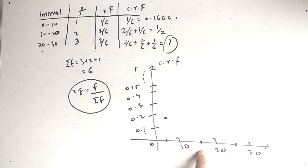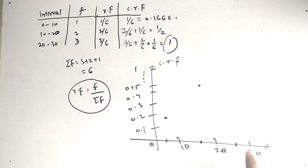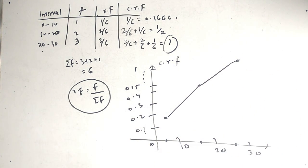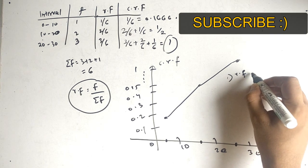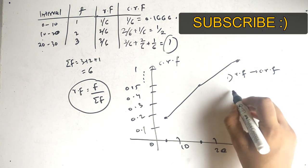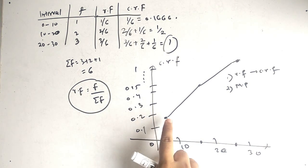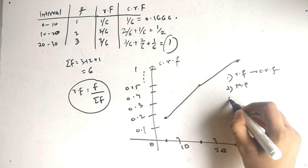For the second point, between 10 to 20 choose the middle point. The respective cumulative relative frequency is 0.5, so plot it there. For the interval 20 to 30, choose the middle point and the cumulative relative frequency is 1. Then just join all the points. So first use the table to find relative frequency and then find cumulative relative frequency. Choose the middle point of each interval and plot the cumulative relative frequency, then join with a straight line.